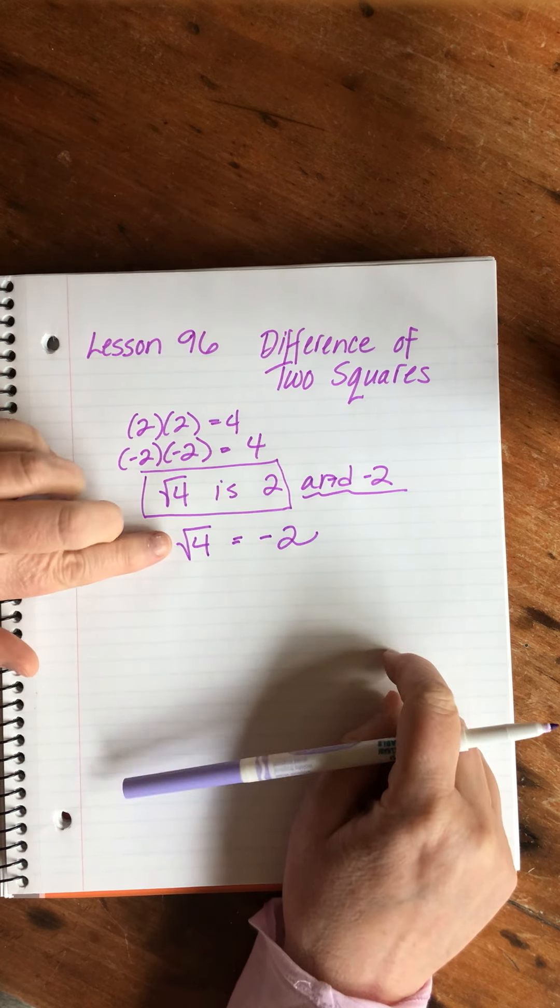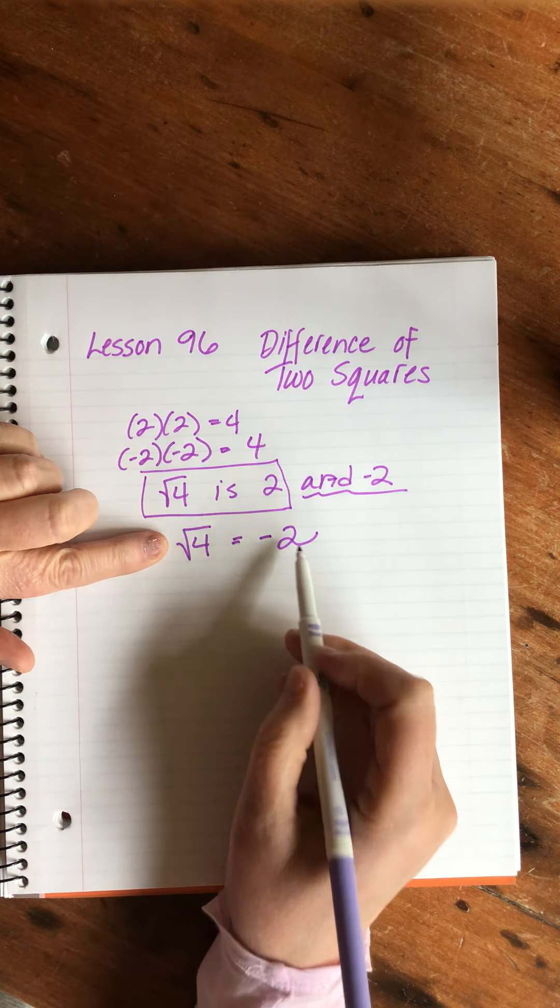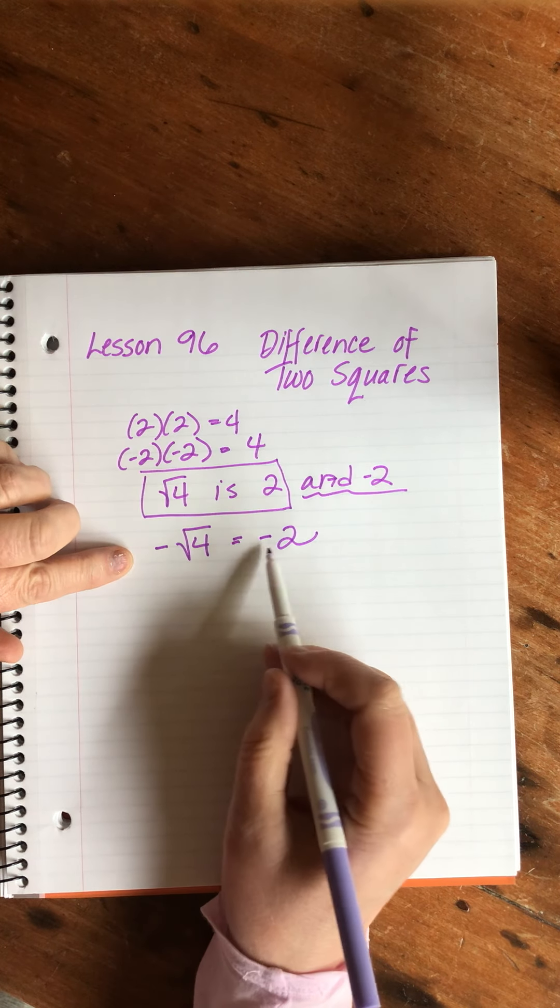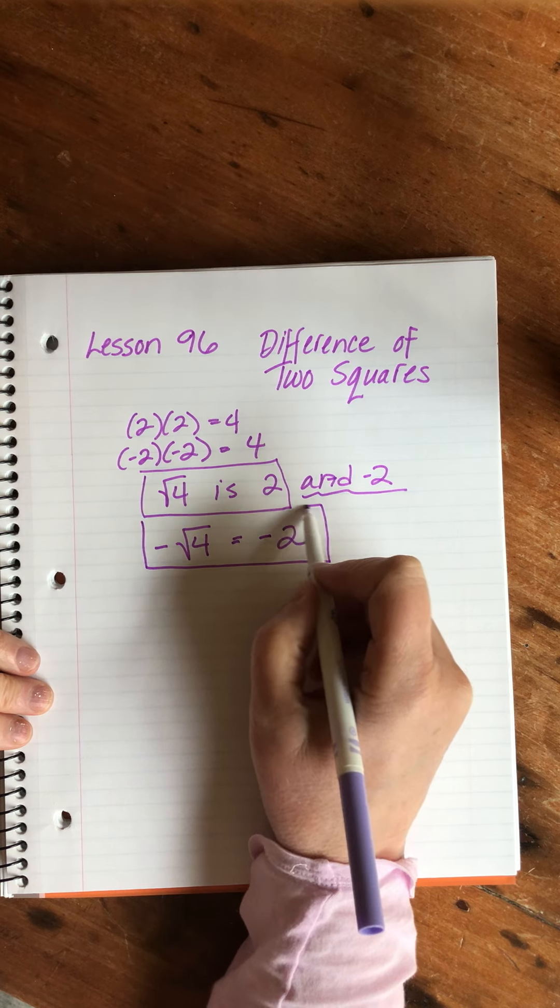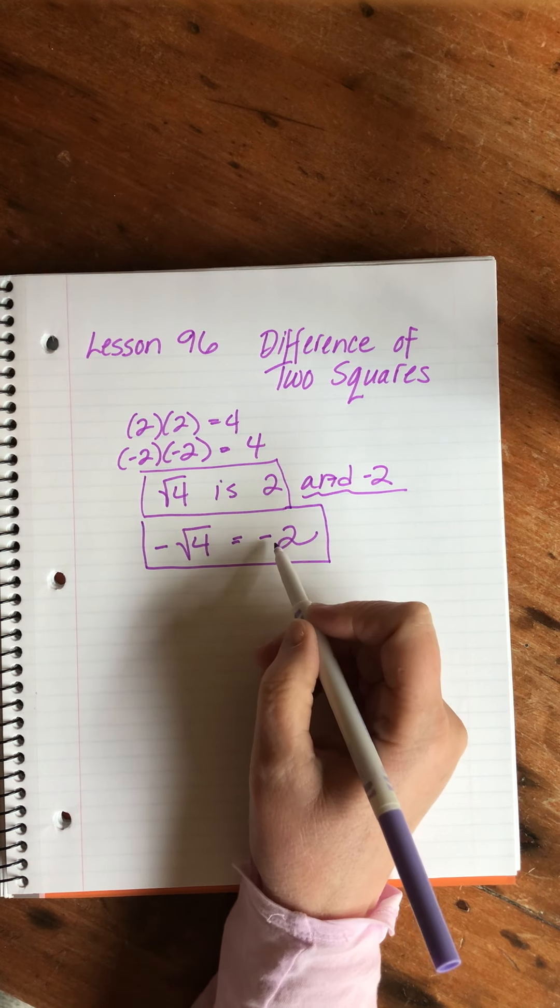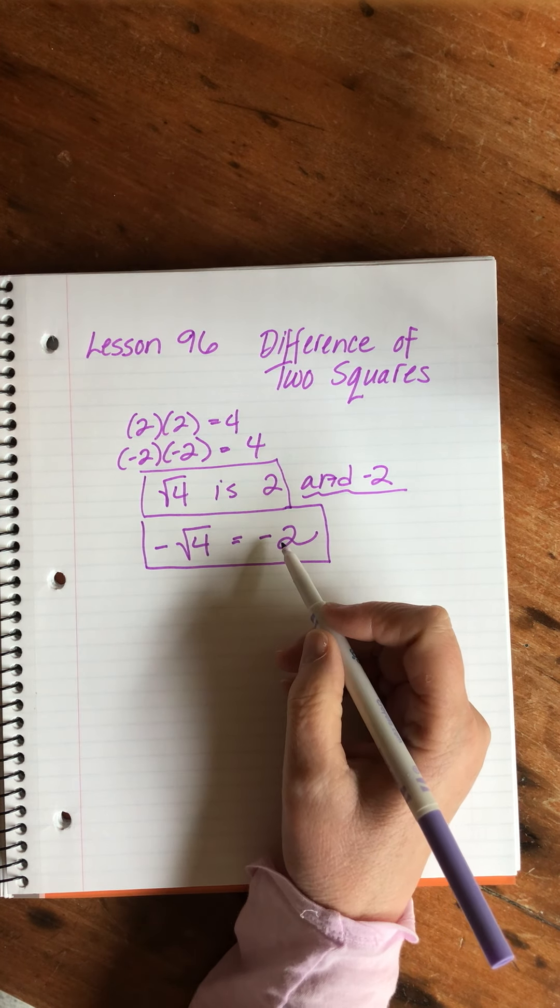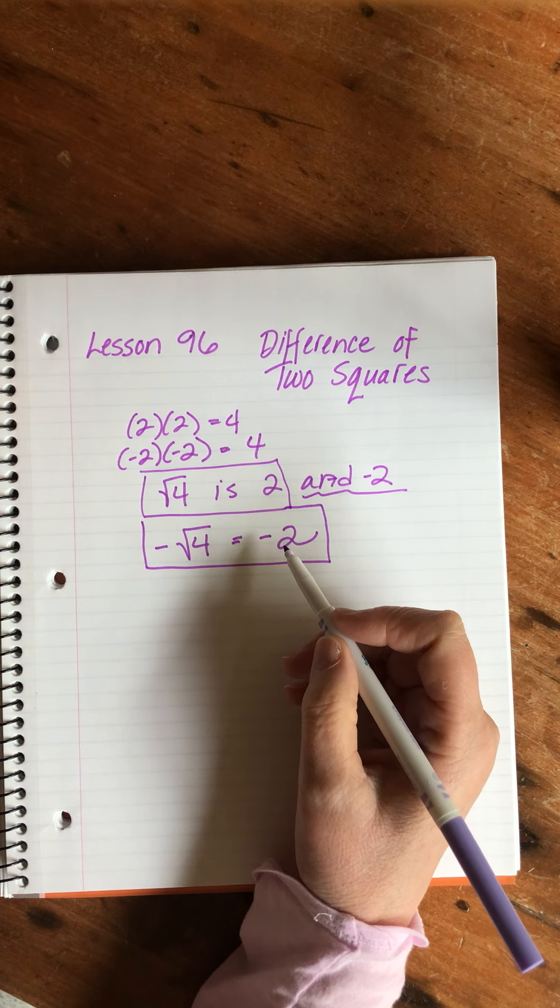If we have a problem like this, we say that x equals two or negative two, because both of those are true.